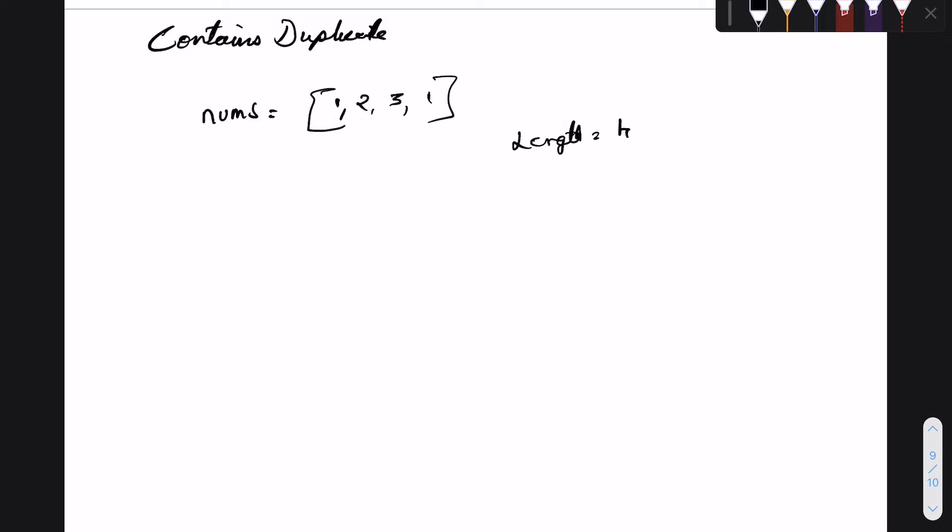Before we get into the solution, let's understand what the problem statement is. We are given an array of length n and an index of n minus 1. What we need to do is find out if any of the elements of the array repeats at least once.